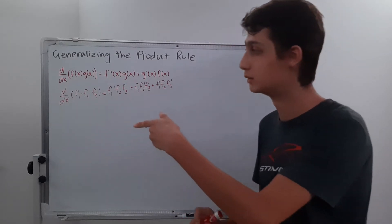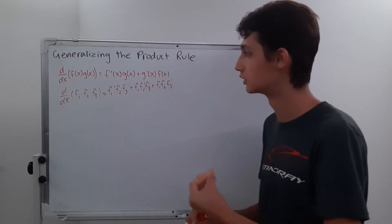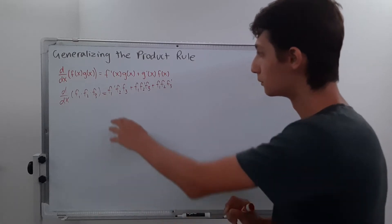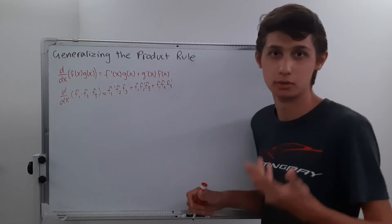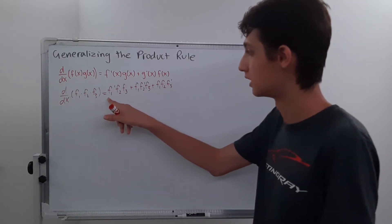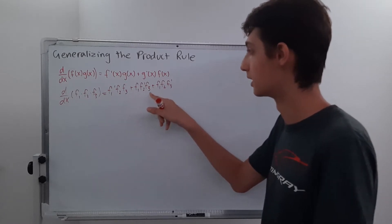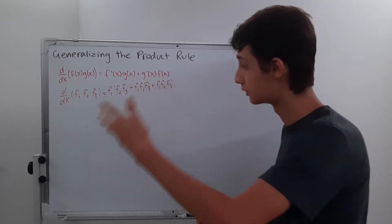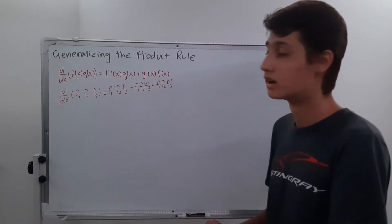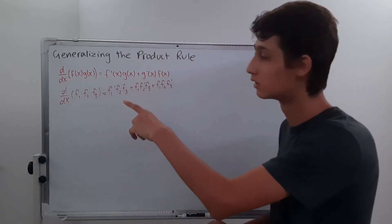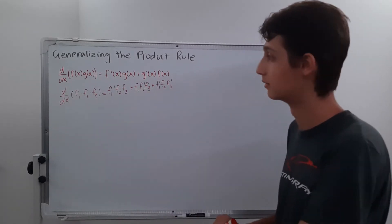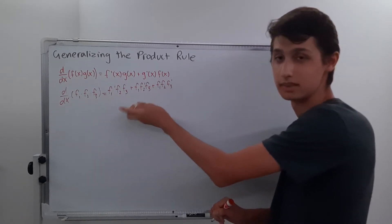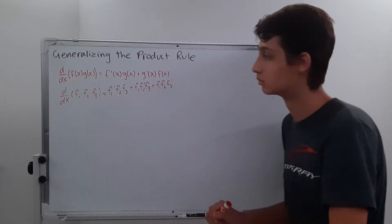If you keep doing this n times, it comes out with a really interesting, elegant result. So assuming this pattern is true — which it is — if we have four functions, we'll have f1 prime times f2, f3, f4, plus f1 times f2 prime times f3, f4, and so on. We have three terms because we have three functions, and in each term we have all of our functions except one, which is the derivative. The one that is the derivative corresponds to the number of the term — first term, first function is the derivative; second term, second function is the derivative; nth term, nth function is the derivative.